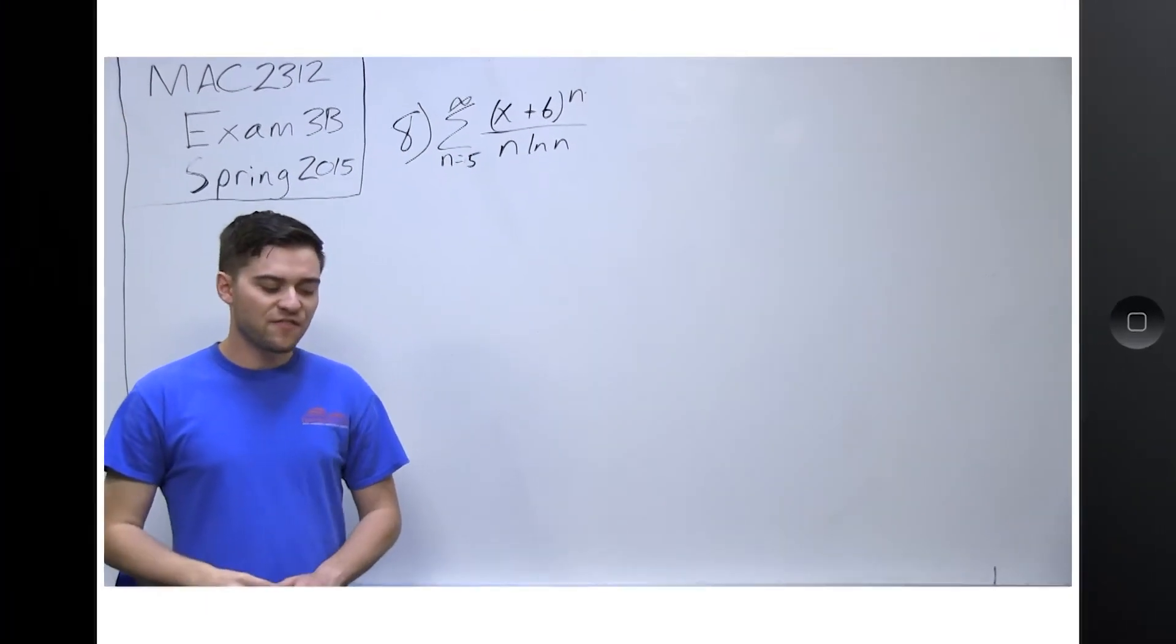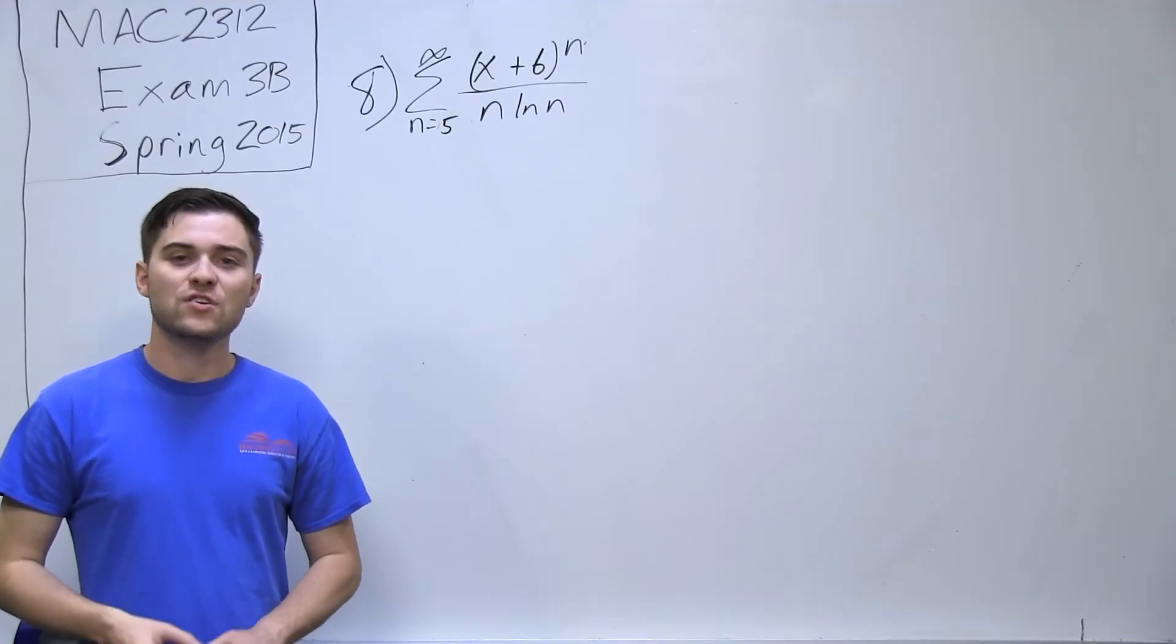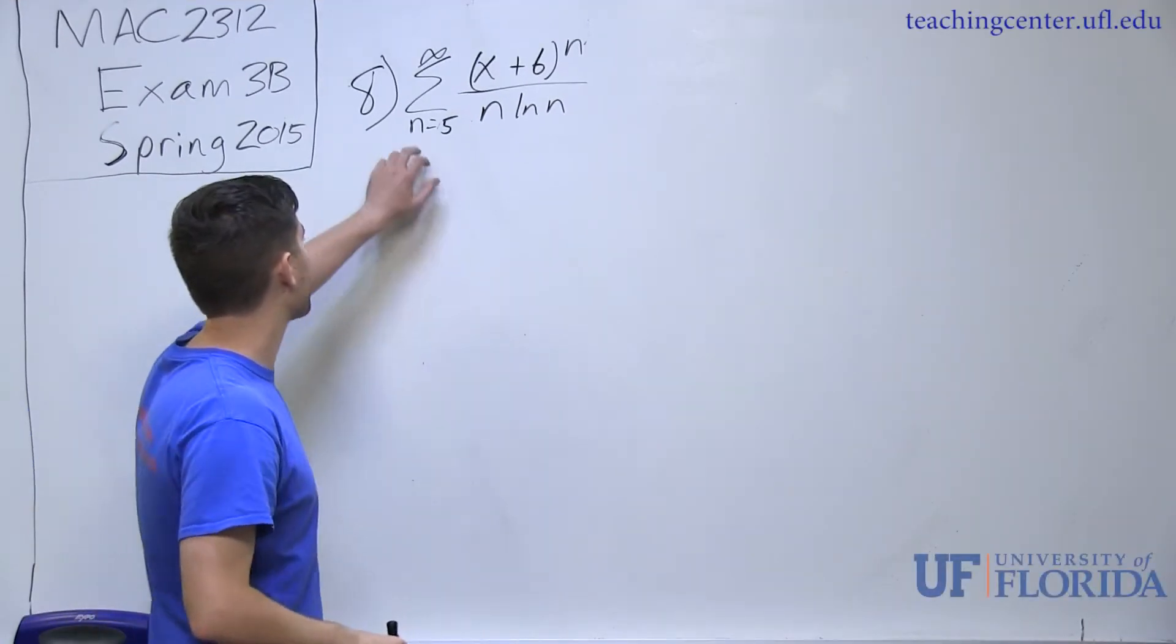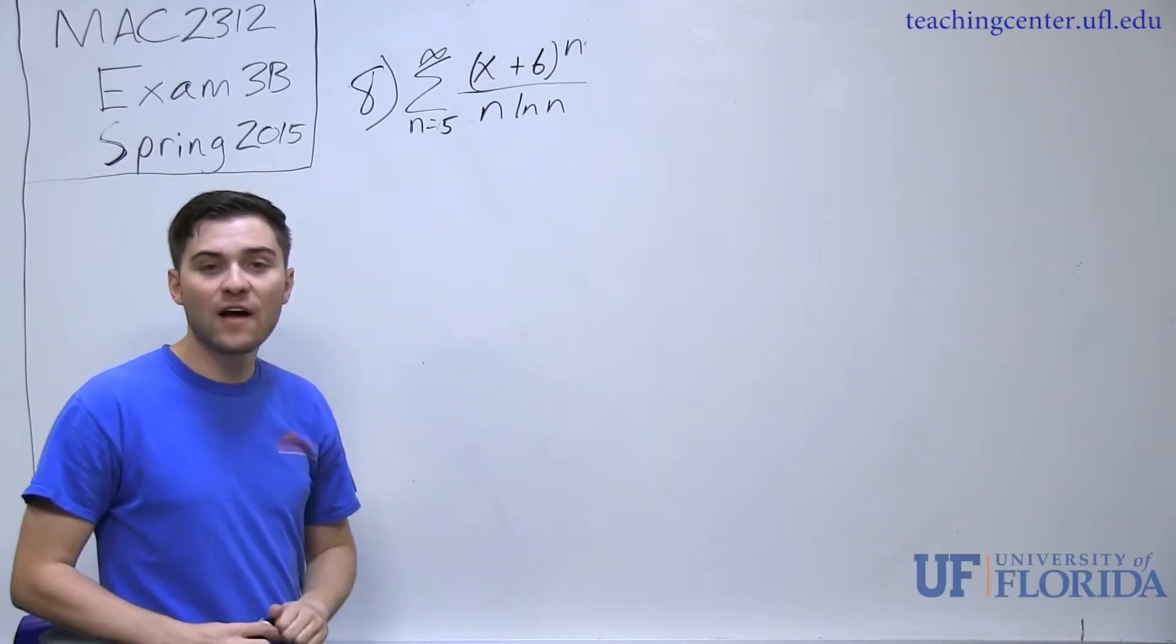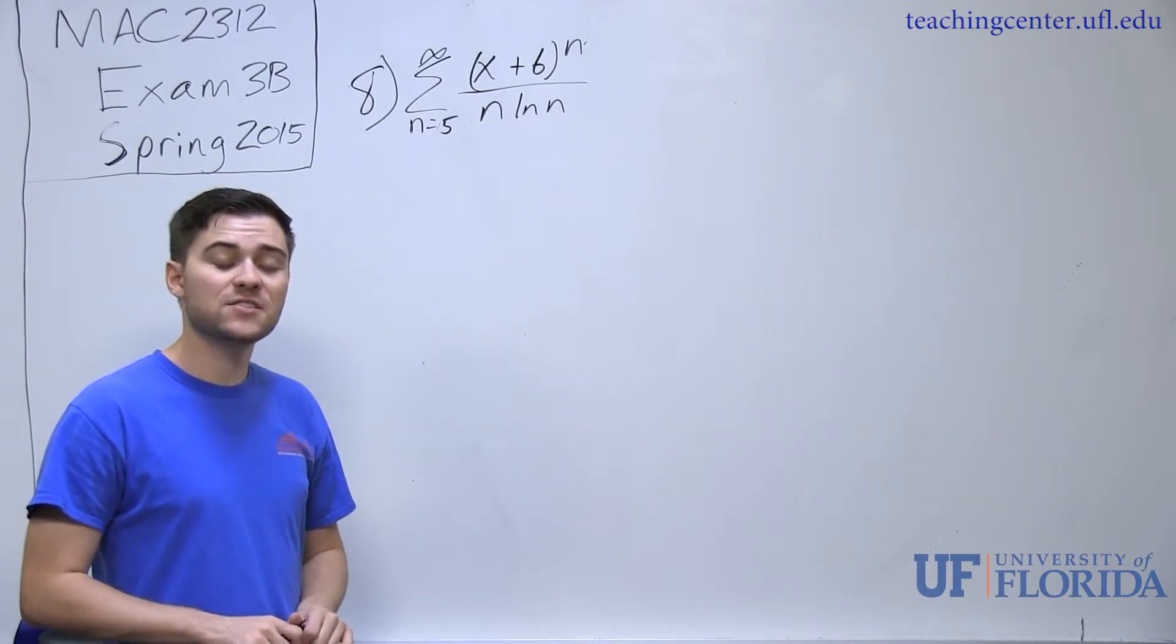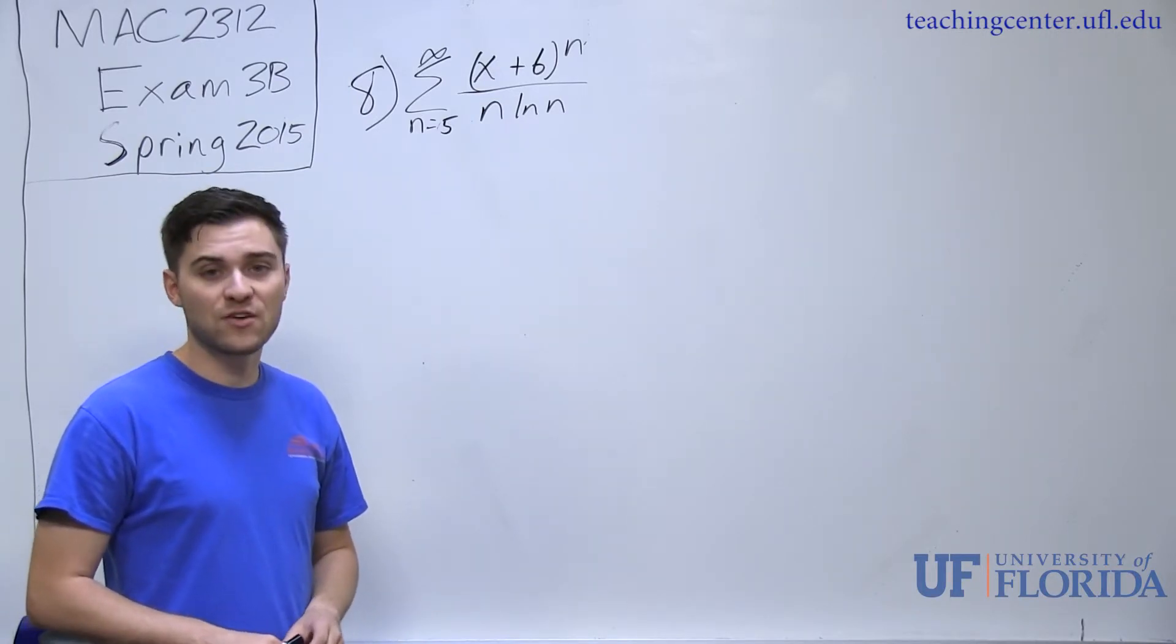Problem number 8 is asking us to find the interval of convergence for the power series. It gives us a power series, summation n equals 5 to infinity, x plus 6 to the n over n times natural log of n.